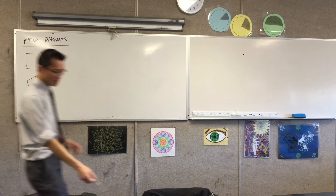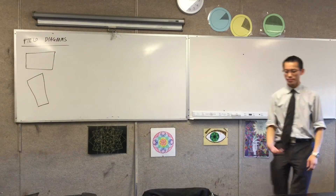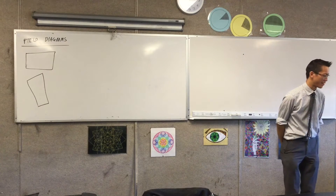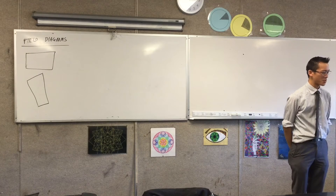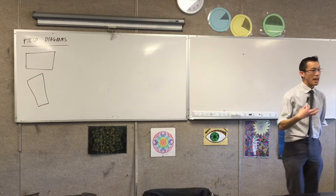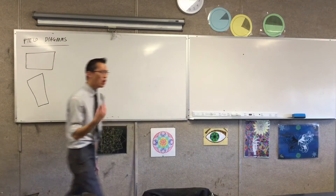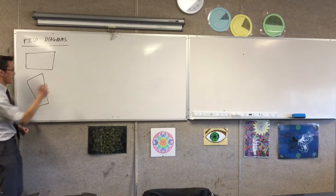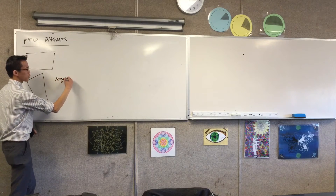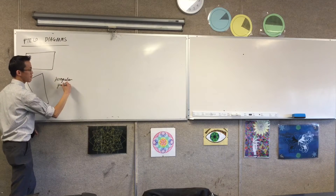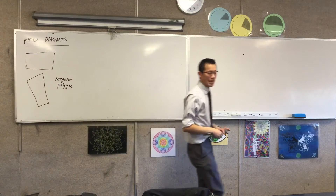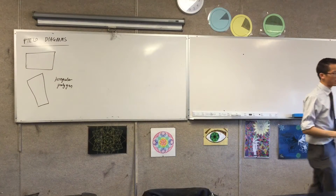Okay, sorry everyone. Let's get back to what we're thinking about. This is worth actually writing down: not rectangles, but a shape like this — straight edges, but none of the edges being equal to each other. We would call this an irregular polygon. Irregular meaning all the sides are different lengths, and polygon meaning you have straight edges.